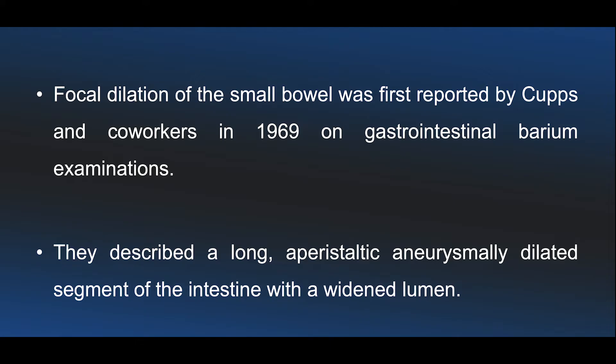These are the factors contributing to aneurysmal bowel dilatation. The normal small bowel contour becomes irregular and dilated because of destruction of the myenteric plexus. This finding was earlier described by Koppes et al. in 1969 on barium studies, where they described it as a peristaltic aneurysmal dilated segment of intestine with a widened lumen.